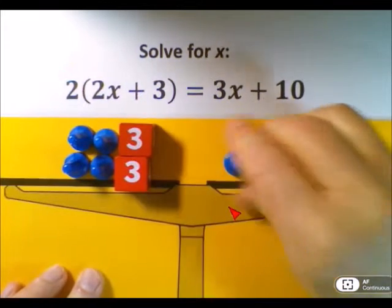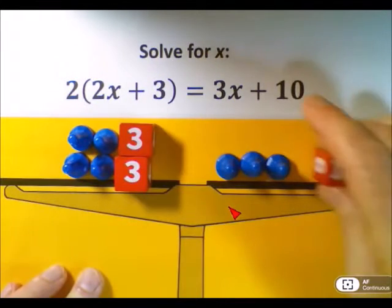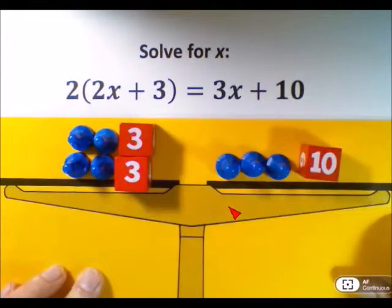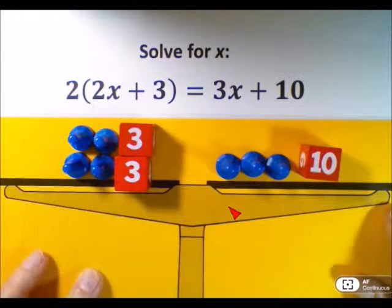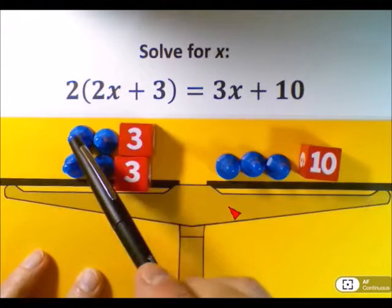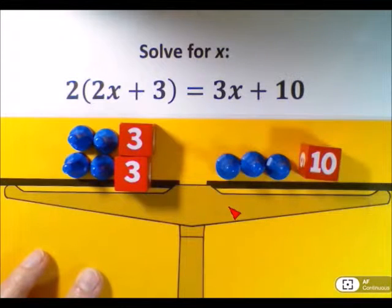So this is what we call the original physical setup. Let's just double check to see that the setup is correct. We have twice 2x plus 3 equals 3x plus 10.